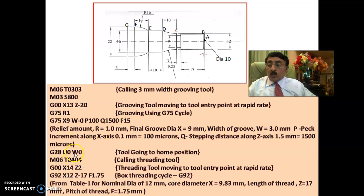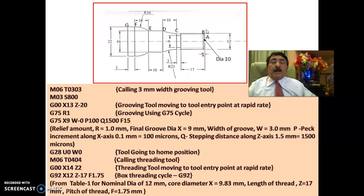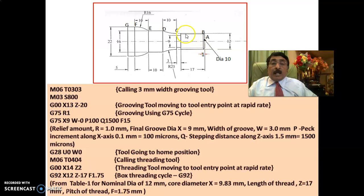After grooving, the tool goes to home position. The fourth tool — the threading tool — is called. G00, X14, Z2 is the tool entry point: X14 is clear of the 12 mm threaded diameter, and Z2 is 2 mm away from the face — a non-colliding position. G92 is the box threading cycle. G92, X12, Z-17 — the thread is cut from X12 down to Z-17, meaning it cuts 17 mm of thread length.